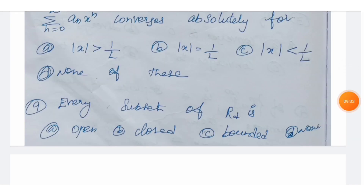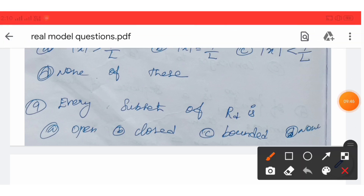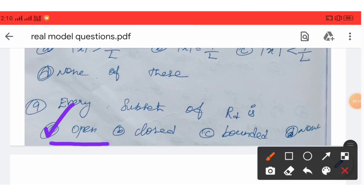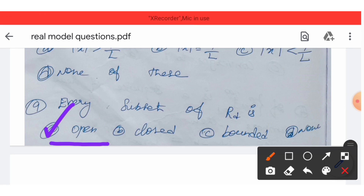Next: every subset of Rd is open. Option A is the correct answer. This is a direct question — every subset of Rd is open.